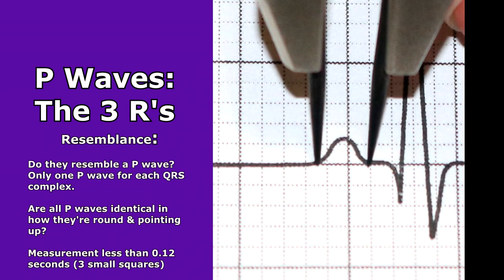Then the resemblance — how do they look? Do they resemble how a P wave should look? There should be only one P wave in front of every QRS complex. Are all the P waves identical, round, and pointing up? And are they less than 0.12 seconds — less than three squares? Look at the P wave and count those squares underneath.